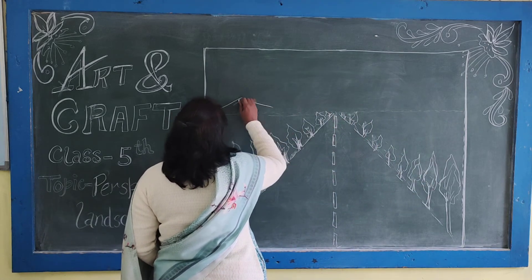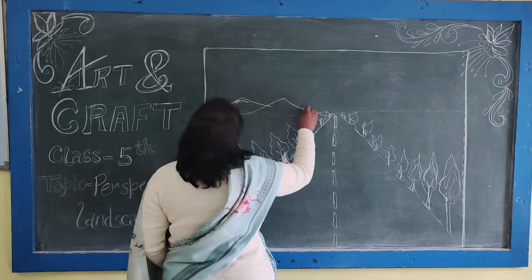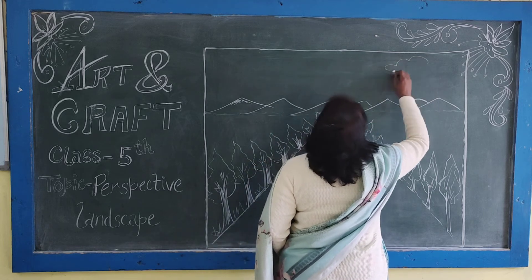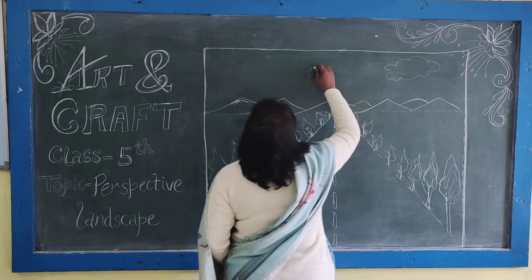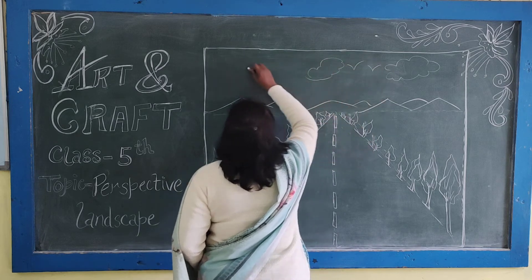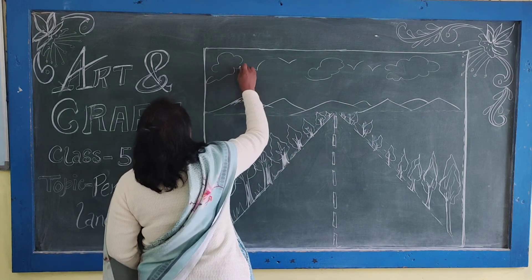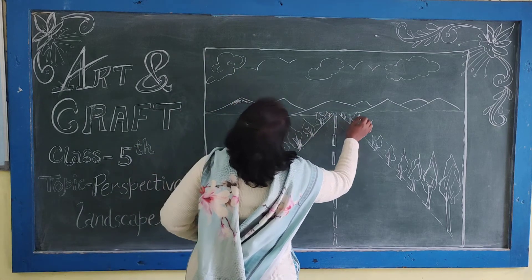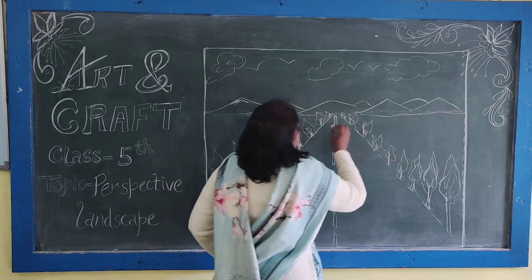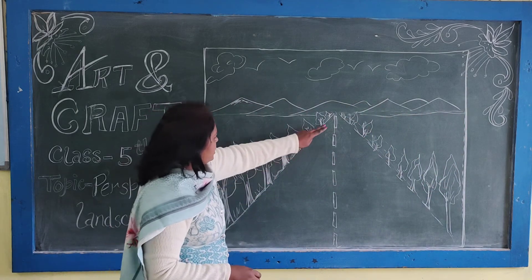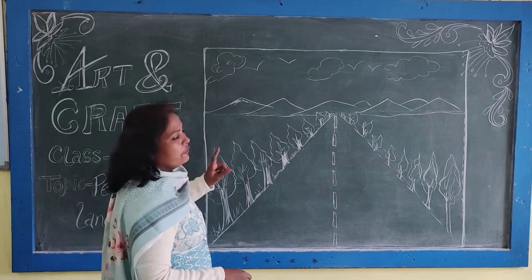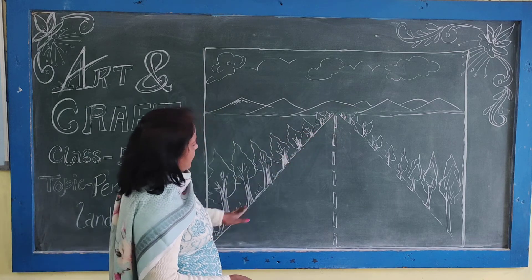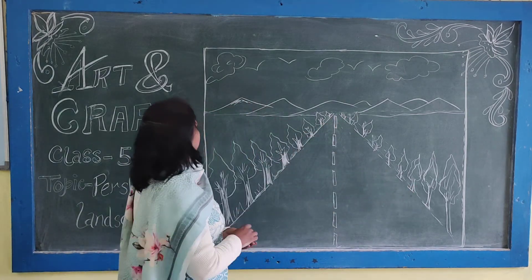Here we draw some flooding or clouds from the upside. This is how simple it appears, but here I am using these lines to create a one-point perspective. One-point perspective means one vanishing point perspective.